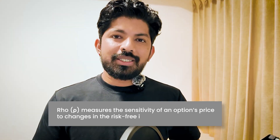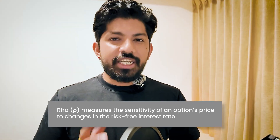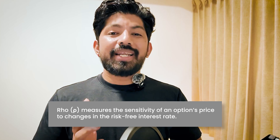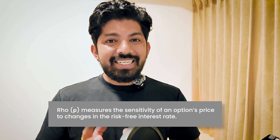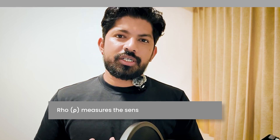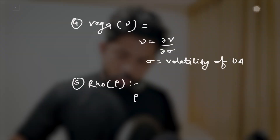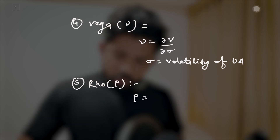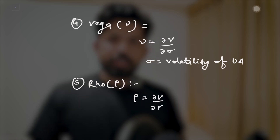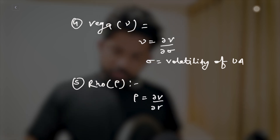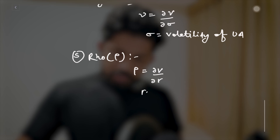Last but not the least, we have rho. Rho measures the rate of change of the option's price with respect to the change in the risk-free interest rate. The formula is: rho = dV/dr, where r represents the risk-free interest rate.